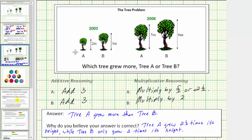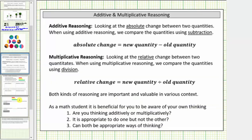Before we go, I want to point out that both kinds of reasoning are important and valuable in various contexts. As a math student, it is beneficial to be aware of your own thinking: are you thinking additively or multiplicatively? Is it appropriate to use one but not the other type of reasoning, or can both be appropriate ways of thinking?